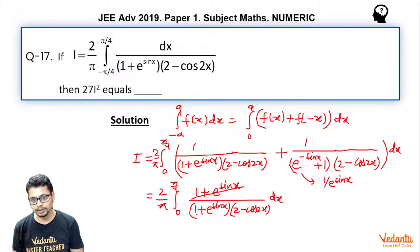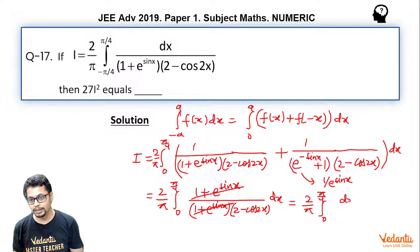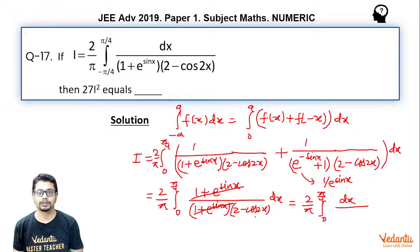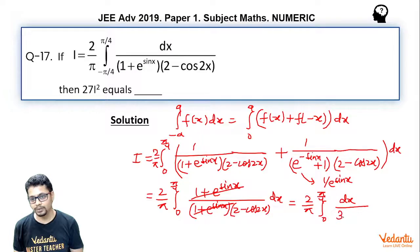This cancels out and what we are left with is 2 by π integral from 0 to π/4 of dx divided by (2 − cos 2x). Now cos 2x can be written as 2cos²x − 1, so the denominator essentially becomes 3 − 2cos²x.